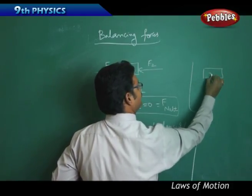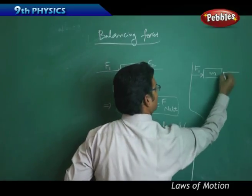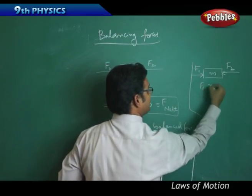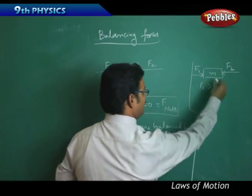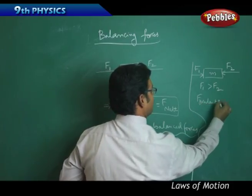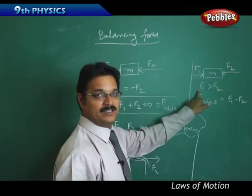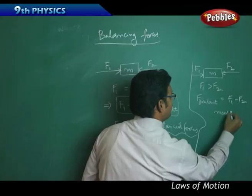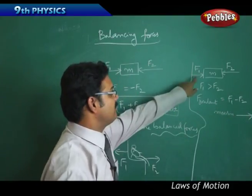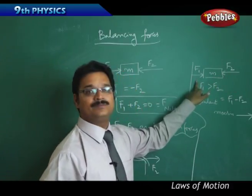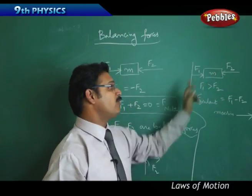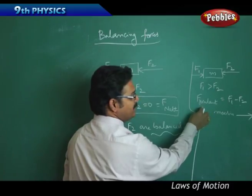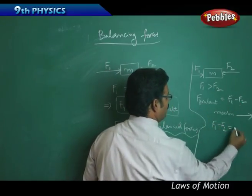Take another example: block M with force F1 acting towards the right and force F2 acting towards the left, where F1 is greater than F2. Then there is a resultant force, which is F1 minus F2, and the body moves in the right direction because F1 is towards the right. If F2 is greater than F1, then the resultant force is F2 minus F1 and the body moves towards the left because F2 is towards the left.